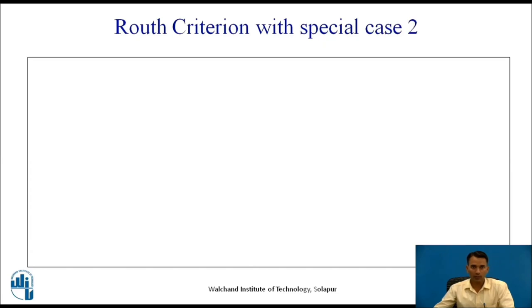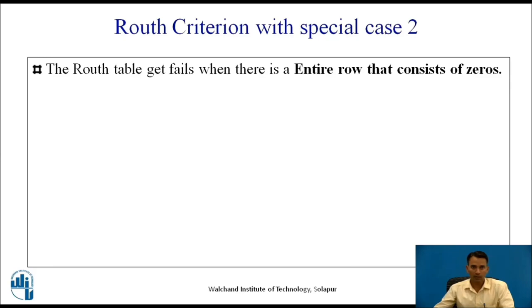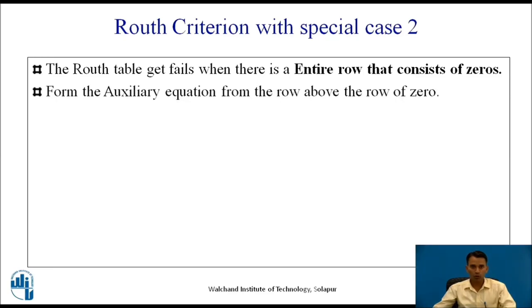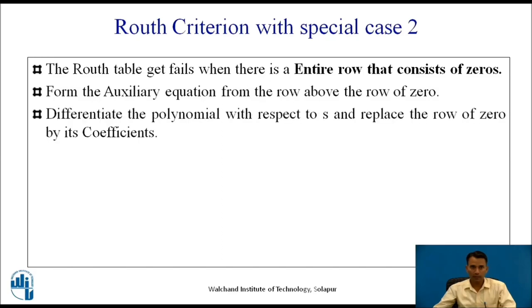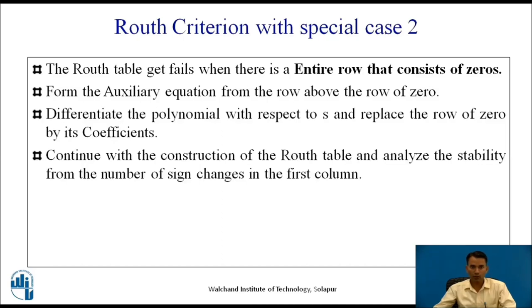Now let us see Routh Criteria with Special Case 2. The Routh table fails when there is an entire row consisting of zeros. To overcome this, we form the auxiliary equation from the row above the all-zero row, differentiate that polynomial with respect to S, replace the row of zeros with its coefficients, continue constructing the Routh table, and then analyze stability from the number of sign changes in the first column.